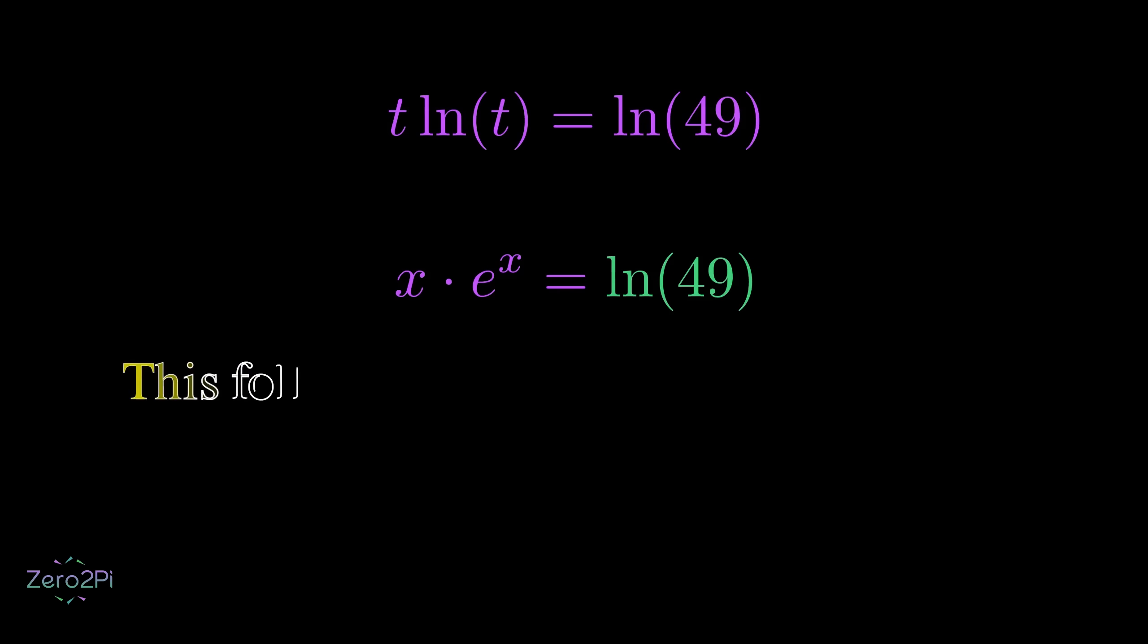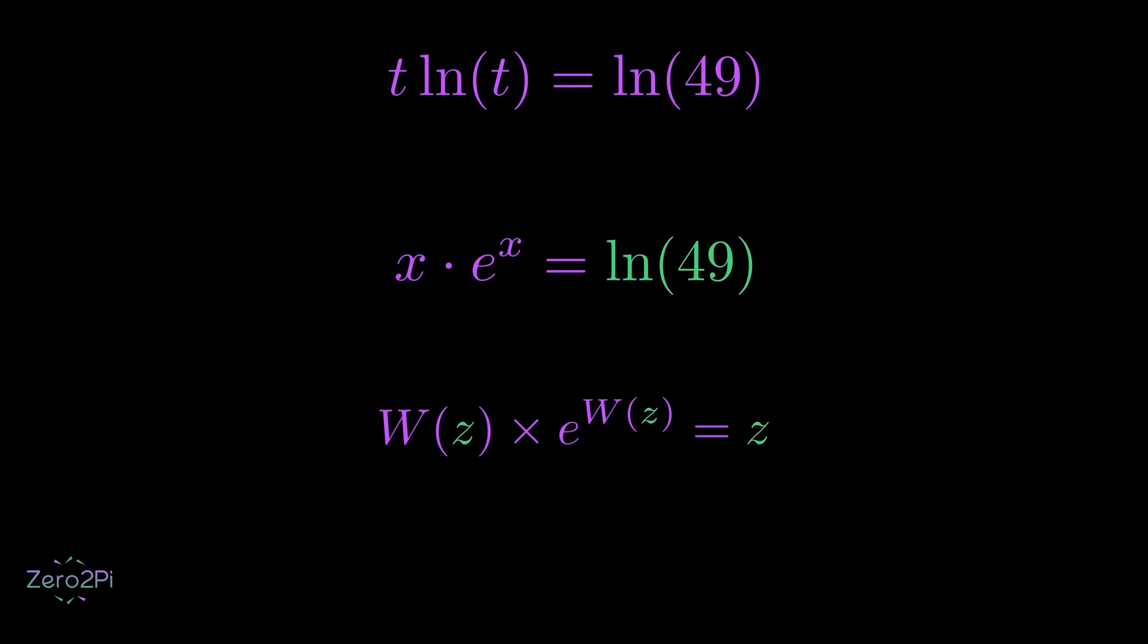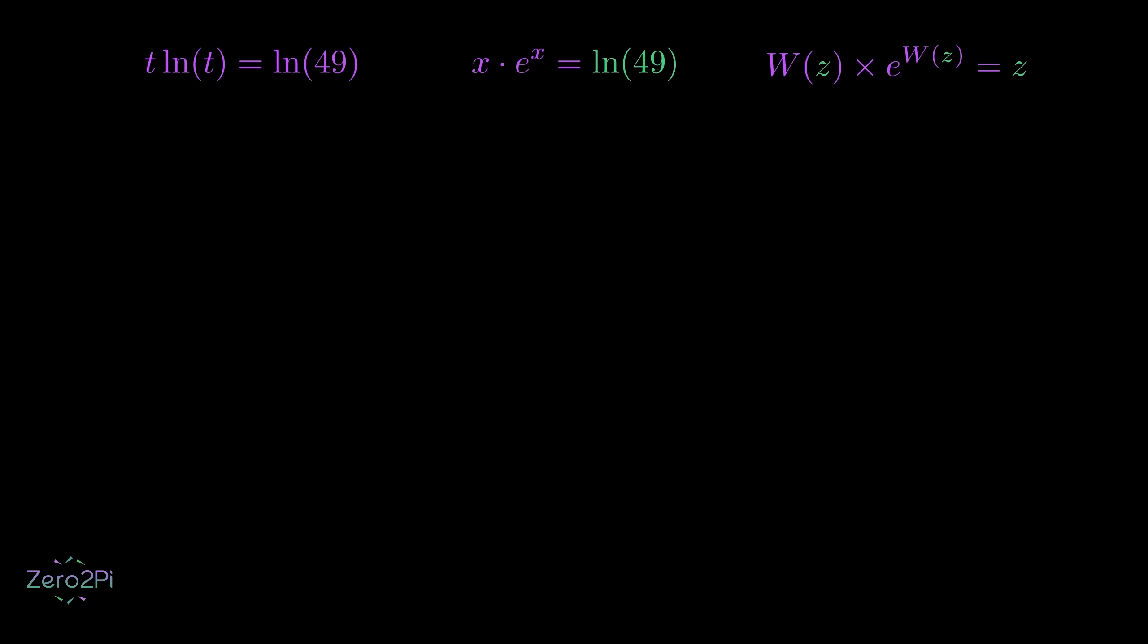This clever substitution transforms our equation into a form that the Lambert W function can handle. Now I want your full attention here. Look carefully at these equations, especially the last two. If we give natural log of 49, which you can think of as z, to the Lambert W function, it will give us... any guesses? Yes, it will give us x.